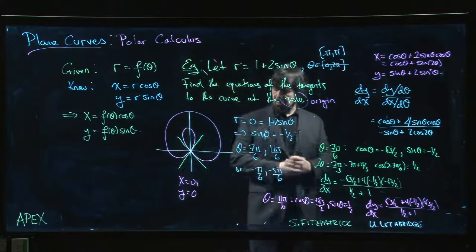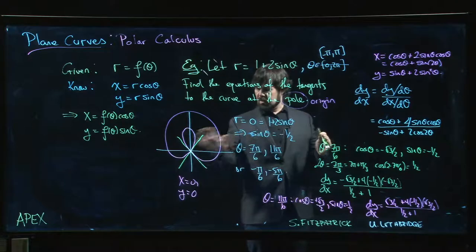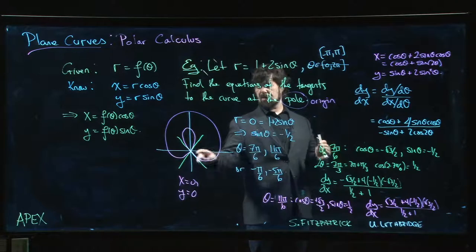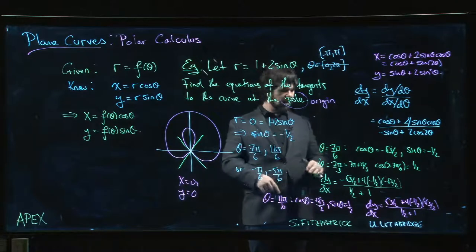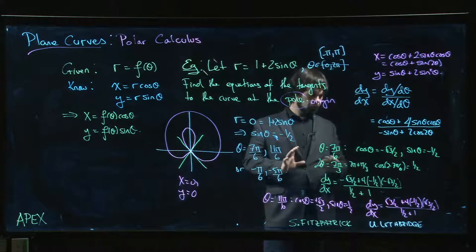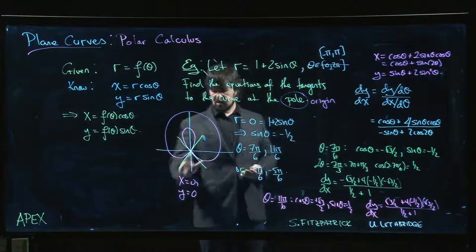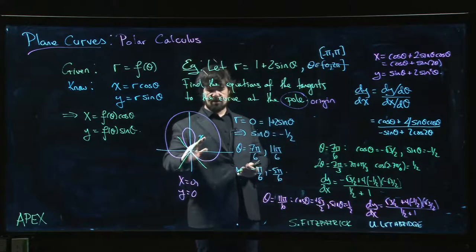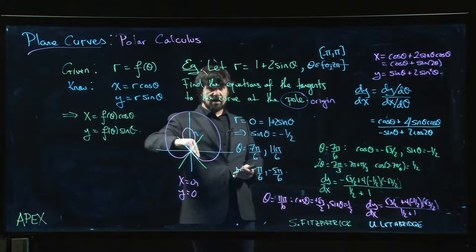That said, now that we know that those tangent lines just correspond to those two angles, these numbers that we get from the slopes, if we were to go ahead and simplify, they should just be tan theta. Tan of 7 pi over 6 should be the slope here, tan of 11 pi over 6 should be the slope there.